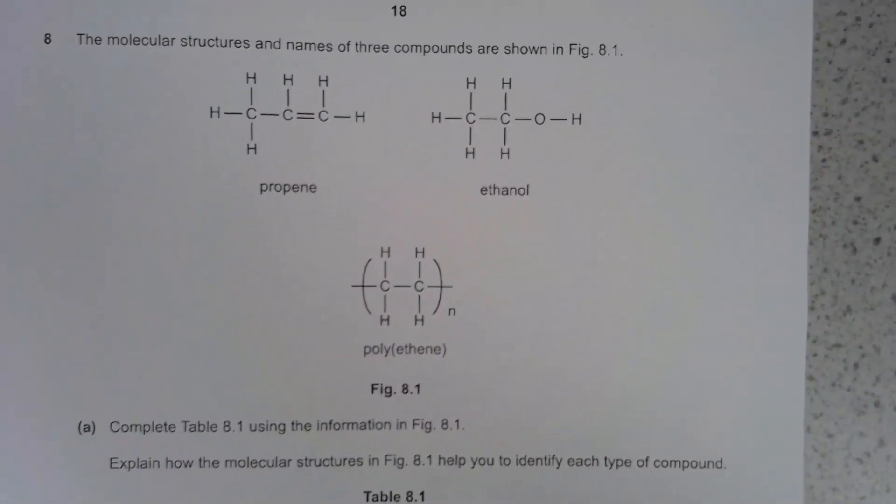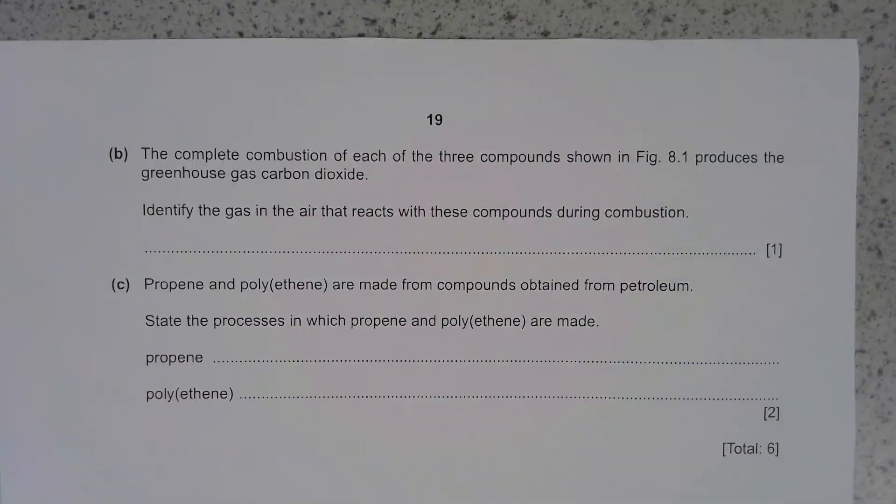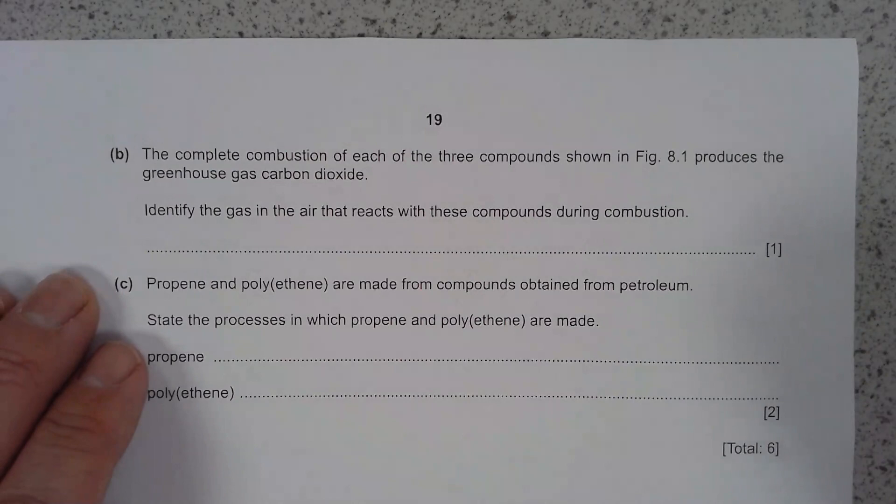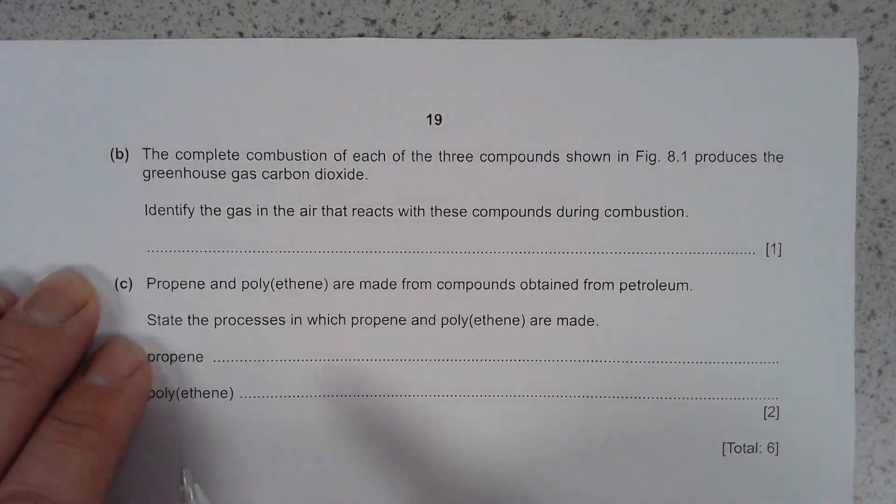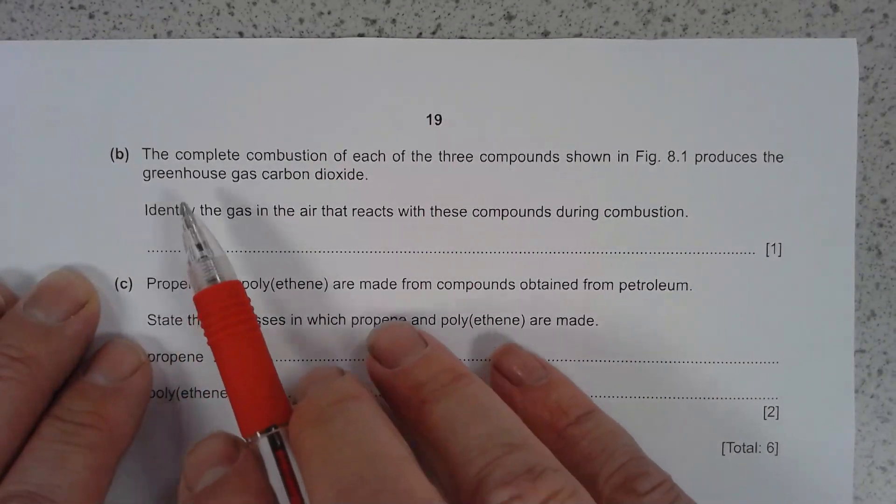So let's move on to the next part of the question. Part B says, complete combustion of three compounds produces a greenhouse gas carbon dioxide. Identify the gas in the air that reacts with these compounds during combustion. So we've got to think about this very carefully. It's a bit of a decoding here.